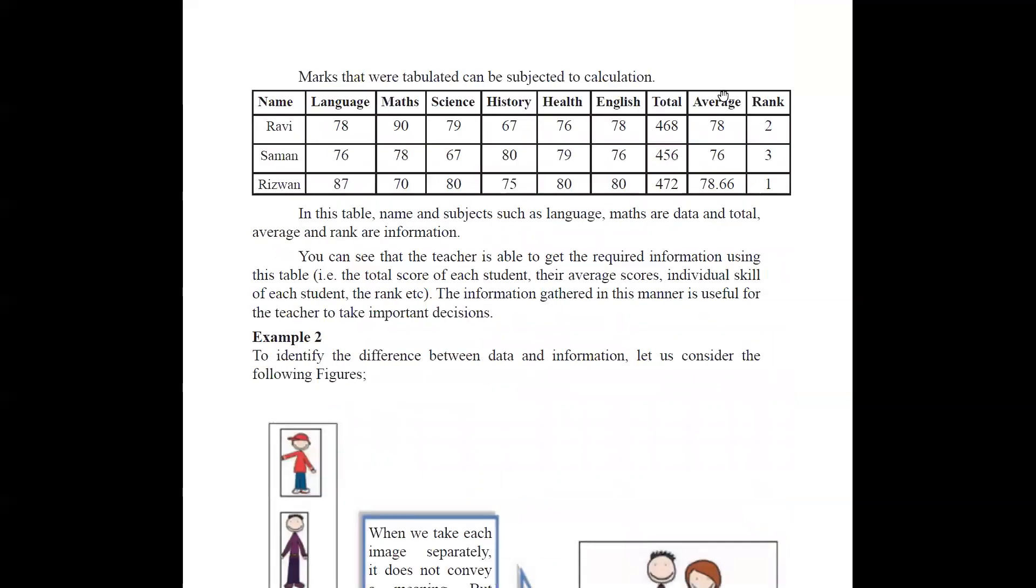But if we calculate the totals, we calculate the averages, and if you rank them, then this is some kind of information which you can use for the decision making. For example, the class first can be rank one, because he has been ranked as the number one, he has got the average of 78. So these things will give more important idea to make decisions.